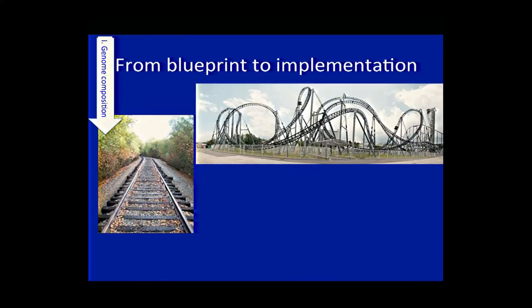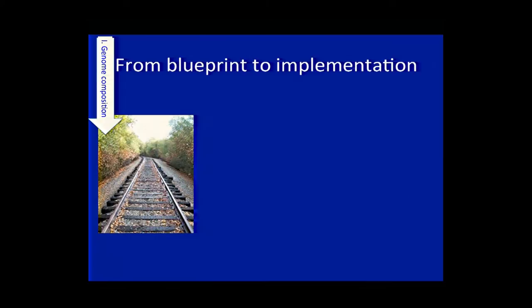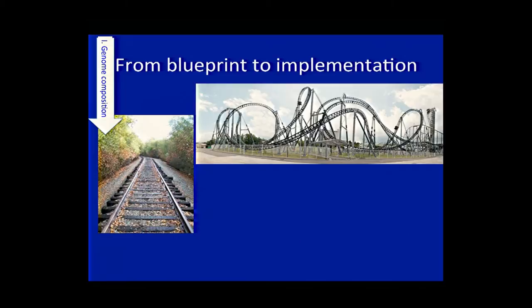Reaching that goal is anything but simple, because the genome is holding onto its secrets very tightly. The image on the left represents our sequenced genome — completely linear, following one base after another, a simple track going from point A to point B. But if you think about it, it carries very important cargo or information. The genome represents much more complicated information than just the simple linear sequence. Just like the dynamics of an amusement park ride, the genome itself comes alive in 3D.